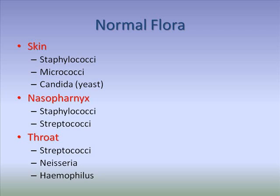Through the use of enriched media such as blood agar and chocolate agar, we can enrich for the growth of normal flora. Using selective media such as Sabouraud dextrose agar, and selective and differential media such as mannitol salt agar, we can isolate and differentiate different species of microbes from the normal flora.